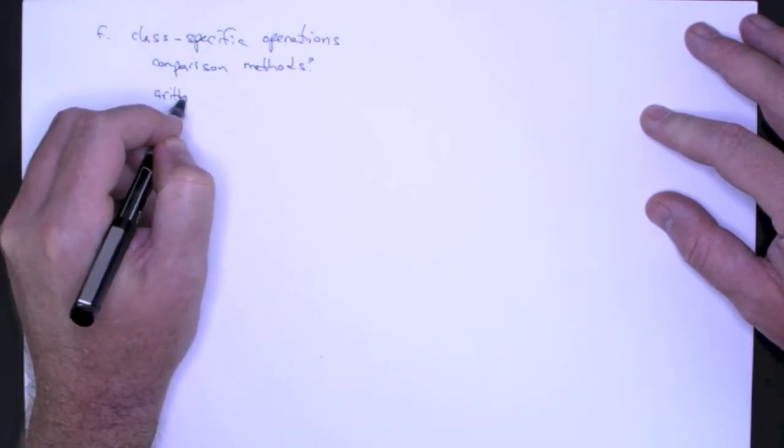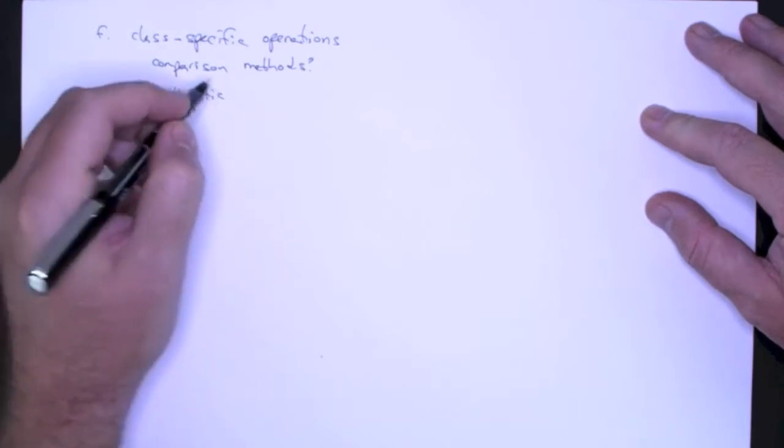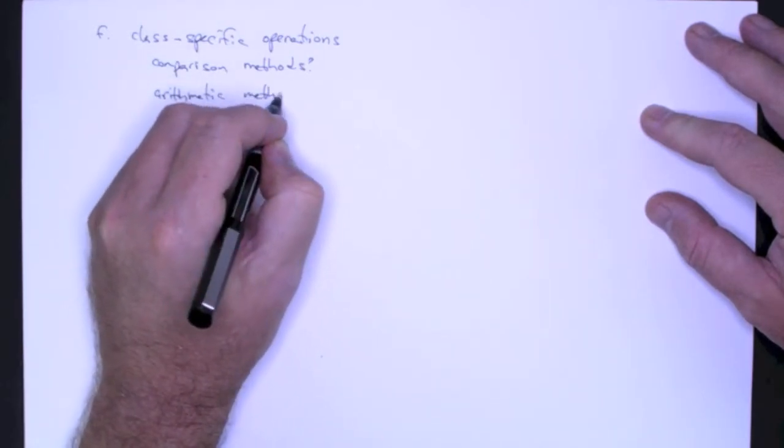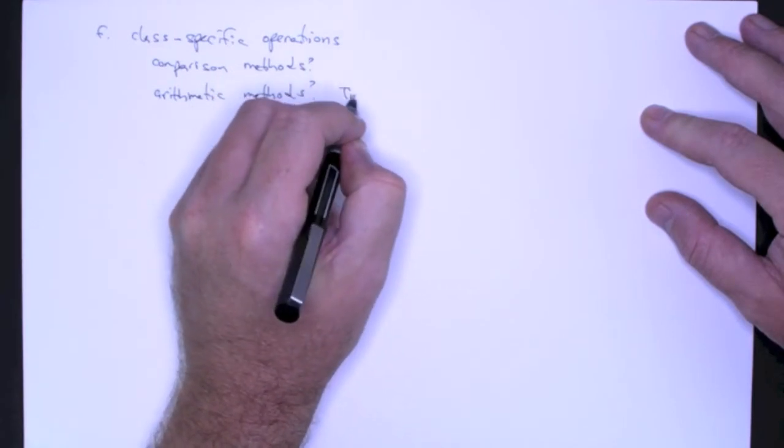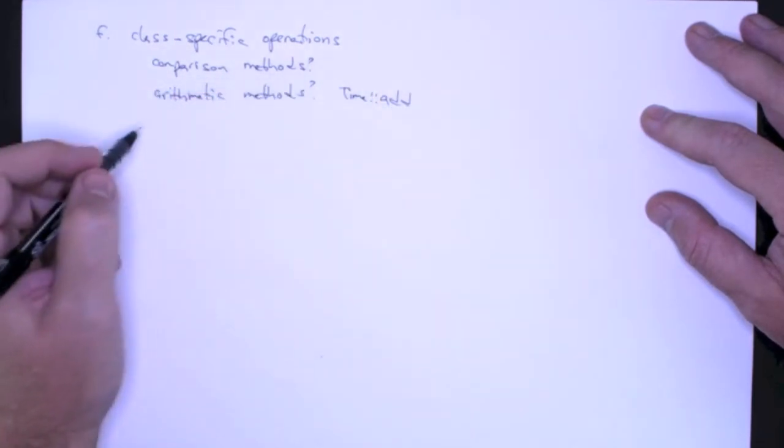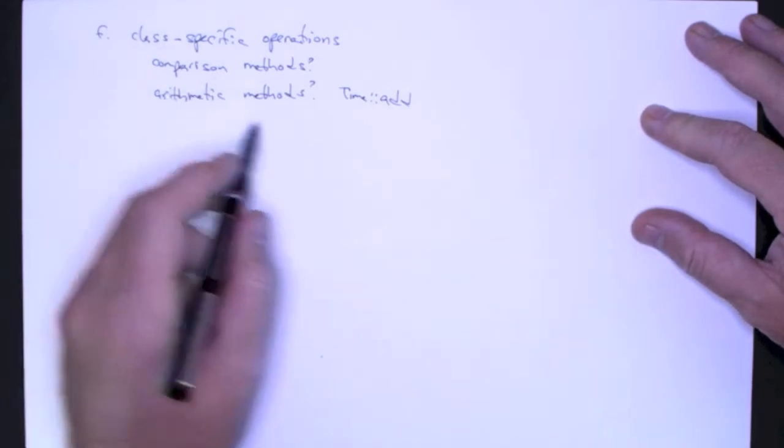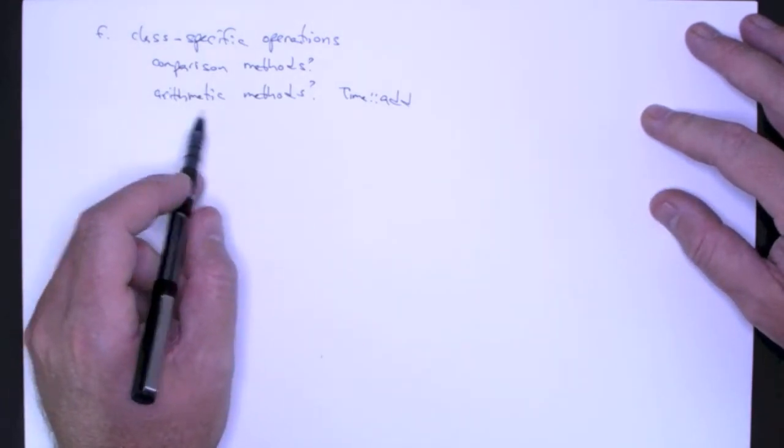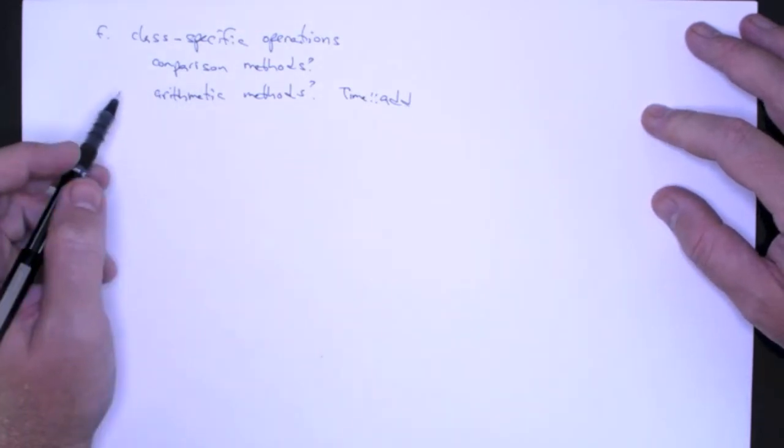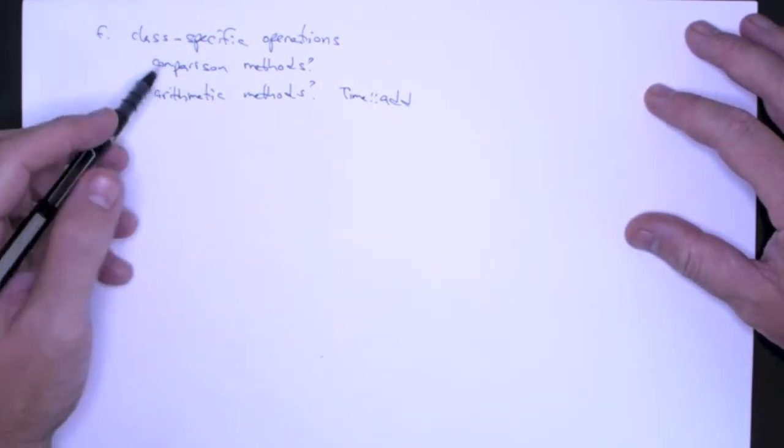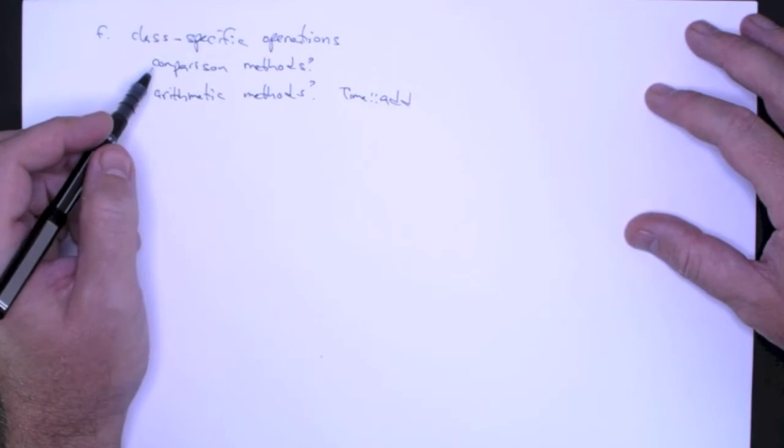Now, you might need to do that in order to sort those objects. And usually you would sort based on the student ID or maybe their last name. So maybe you need some comparison methods. What about arithmetic methods? So time, for example, we want to be able to add times together. It certainly doesn't make any sense to add two students together. It makes sense to add time together. So there are going to be a lot of class specific operations.